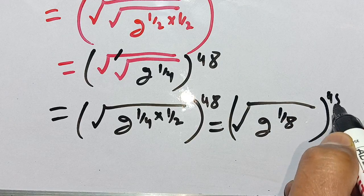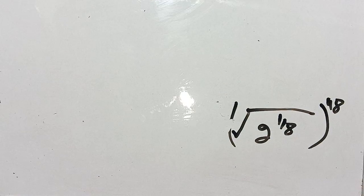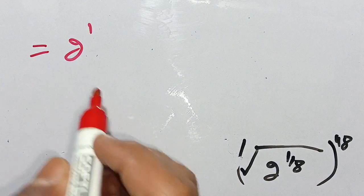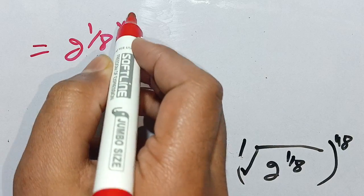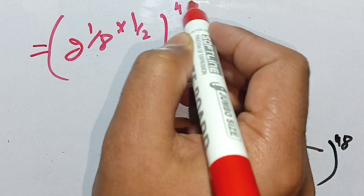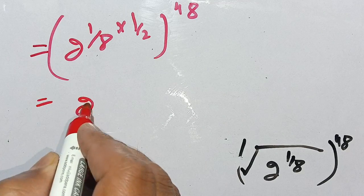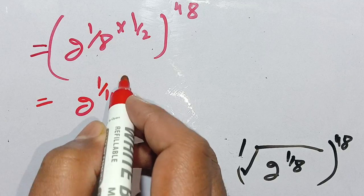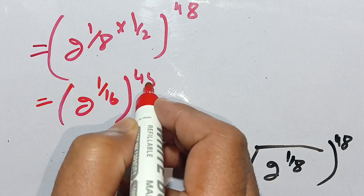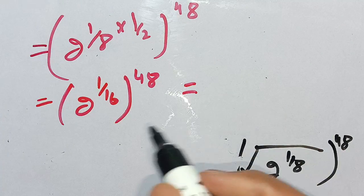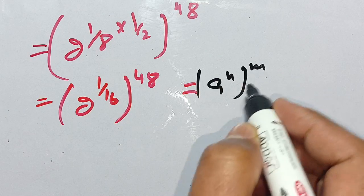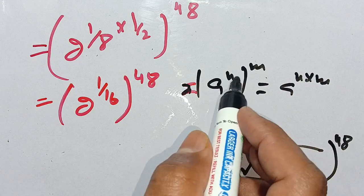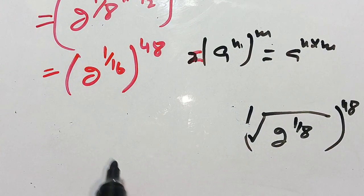We evaluate the final square root. We get 2 to the power 1 divided by 8 times 1 divided by 2, which equals 1 divided by 16, to the power 48. This is in the form of a raised to the power n bracket m, which equals a raised to the power n times m — meaning we multiply the exponents.